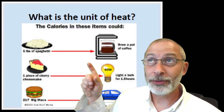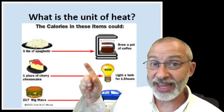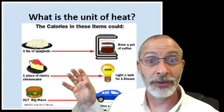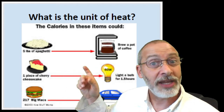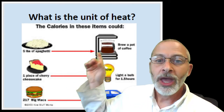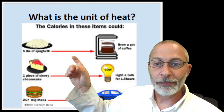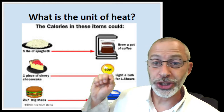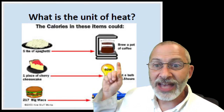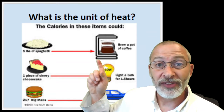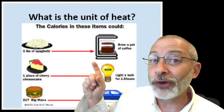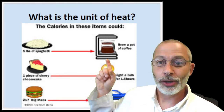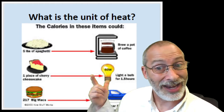I could probably easily eat a pound of spaghetti without a problem at one sitting, maybe even two pounds if I was really hungry. But five pounds of spaghetti — believe it or not — have the same amount of heat energy as it would take to brew a pot of coffee. And we're not talking about a Keurig; we're talking about a regular percolator coffee pot, which requires a lot of heat energy.